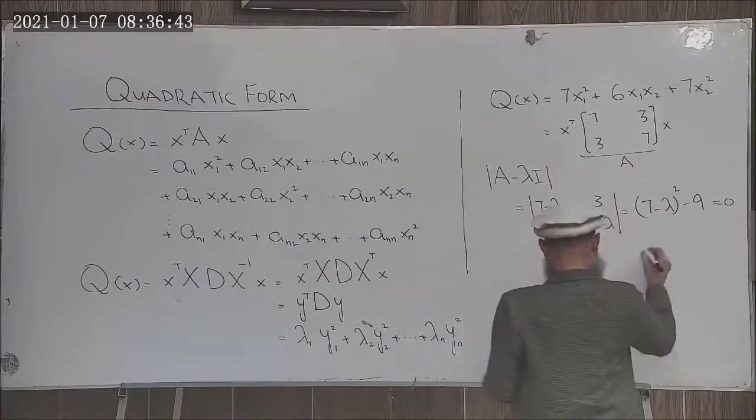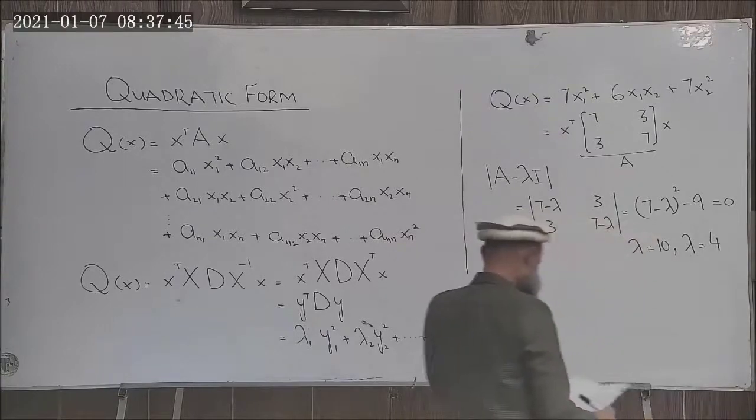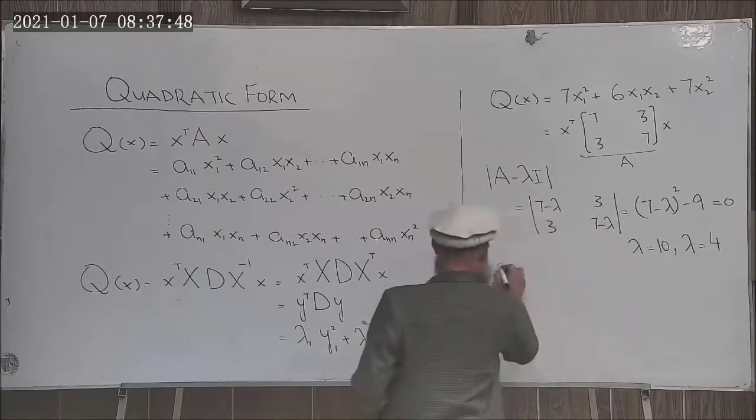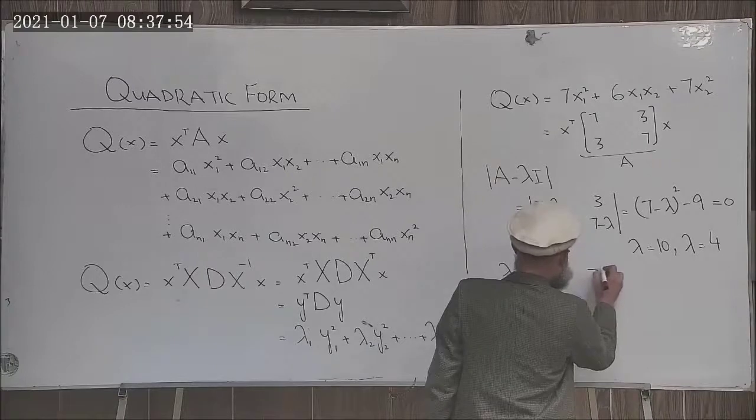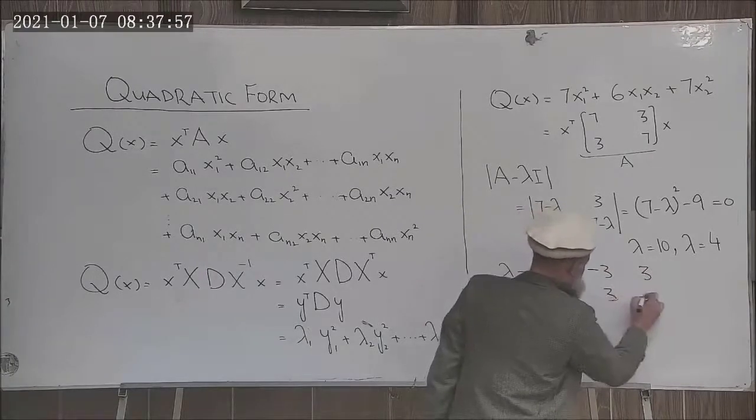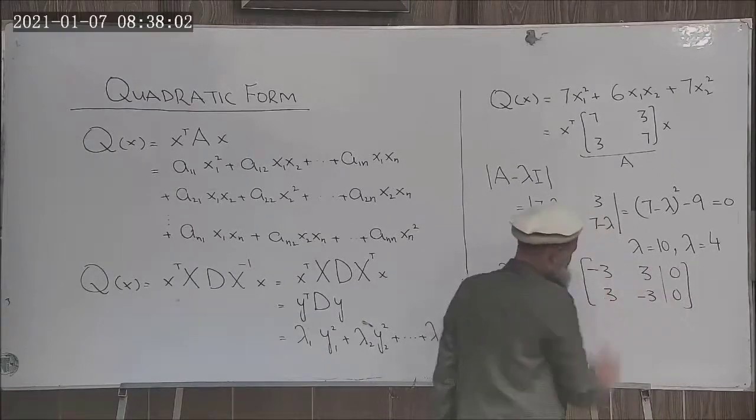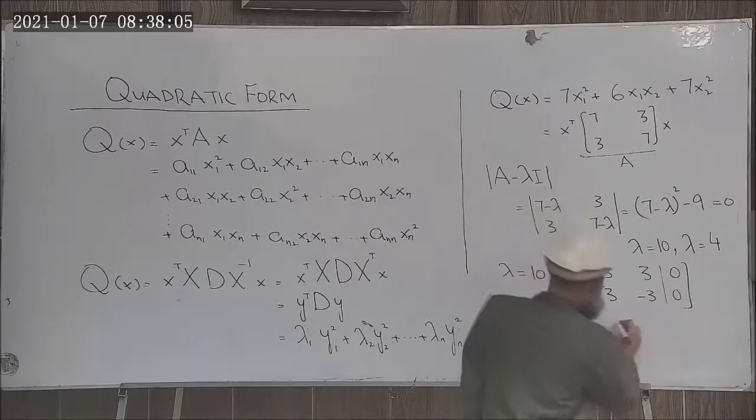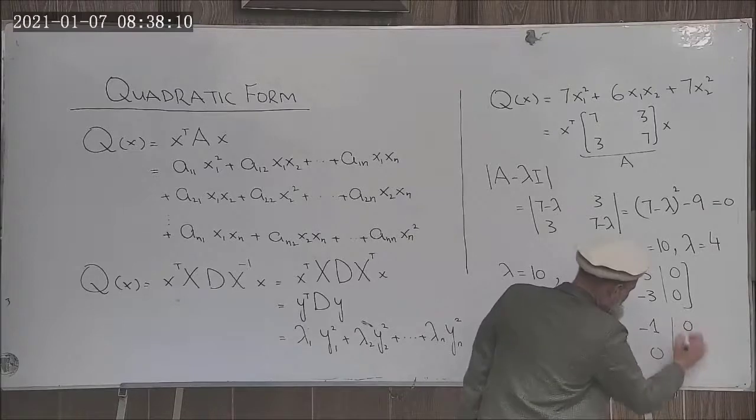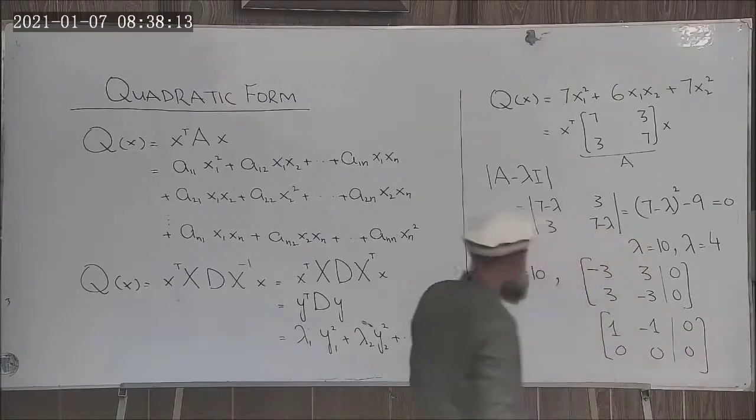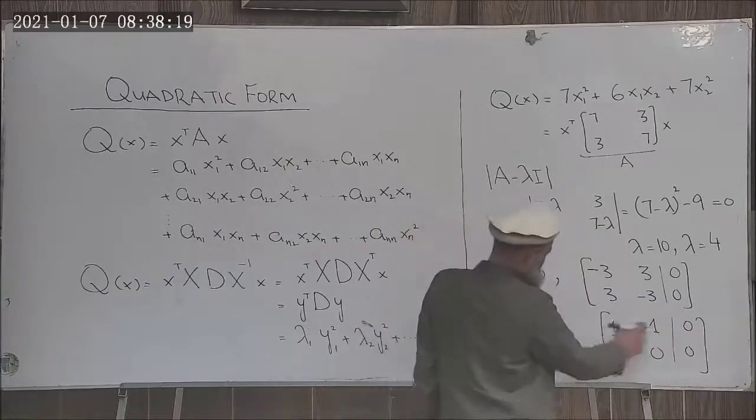Corresponding to these eigenvalues we can find the eigenvectors. Corresponding to lambda equal to 10, we have minus 3, 3, 3, 3, minus 3 and 0. This is the augmented matrix which is the same as 1, minus 1, 0, 0. This is row equivalent to this matrix.